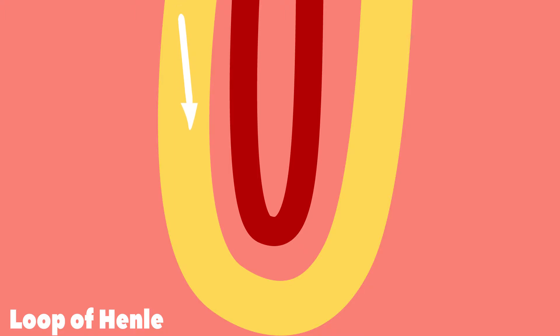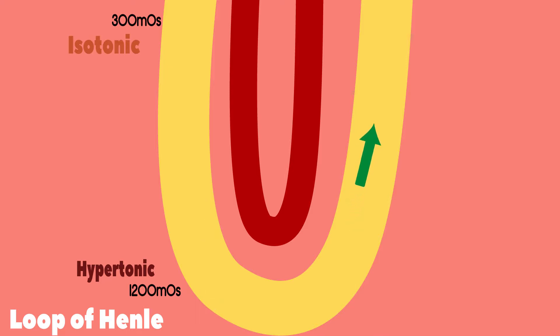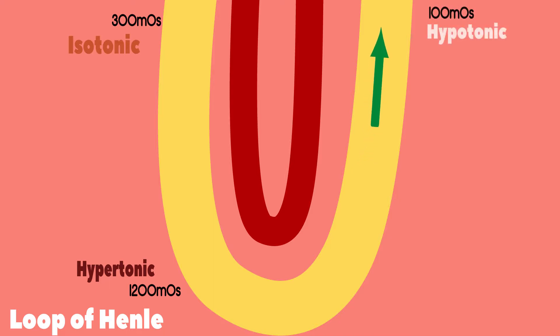The ultrafiltrate enters the loop of Henle as isotonic to blood, approximately 300 milliosmoles. This is very important because in the loop of Henle, the ultrafiltrate will change to hypertonic — approximately 1,200 milliosmoles, so significantly more concentrated — and then to the other end of the spectrum to hypotonic, which is approximately 100 milliosmoles. Because of the active transport of ions such as sodium in the ascending limb, and the diffusion of water in the descending limb, a gradient is developed: the corticomedullary gradient.